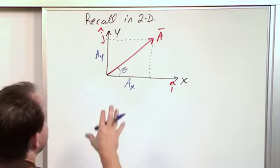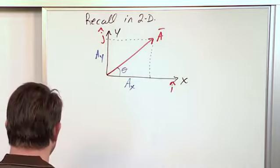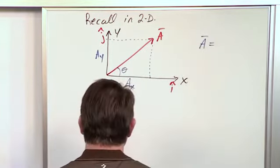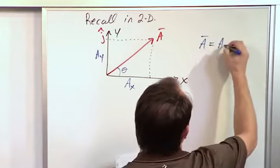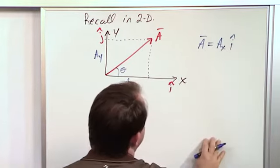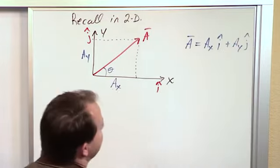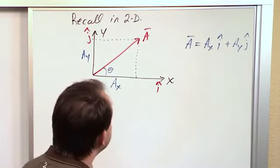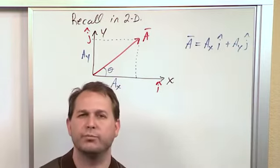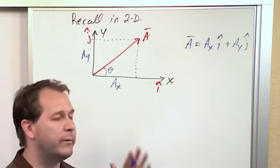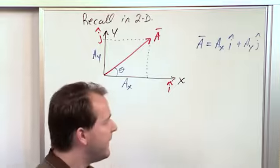And because we can take any vector and find the projections along the different axes, we can represent any vector we want as the x component acting in the i-hat direction plus the y component in the j direction. I know none of this is new to you, but I want to kind of get your brain working because I'm going to take a direct parallel and extend what we've learned in two dimensions to three dimensions.